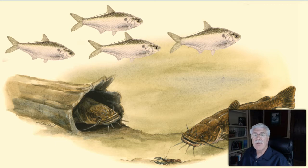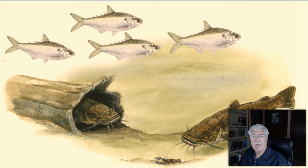Once the flatheads grow large enough, they begin to prey on live fish. They spawn in sheltered areas on the lake bottom, such as cavities in logs, undercut banks, and in rocks.